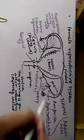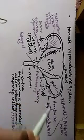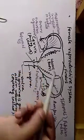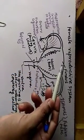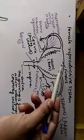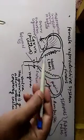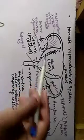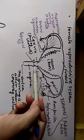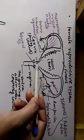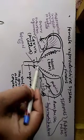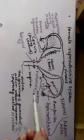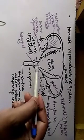Fallopian tube is the site where fertilization takes place. After that, you see this pouch-like structure — this is the uterus. The upper part or roof of the uterus is called the fundus. After the fundus, the cavity is called the body of the uterus. After that comes the cervix — the narrow region of the uterus. In the cervix, the upper opening is called the internal os and the lower opening is the external os; 'os' is an abbreviation of orifice.